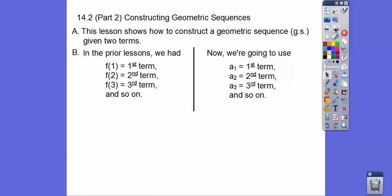So a sub 1 equals our first term, a sub 2 equals our second term, and a sub 3 equals our third term. This is typically how they write geometric sequences and arithmetic sequences, with the subscripts. It's the same thing, you guys.